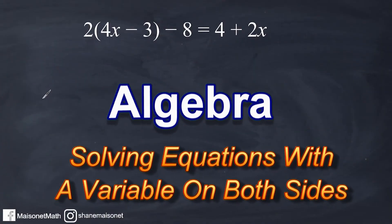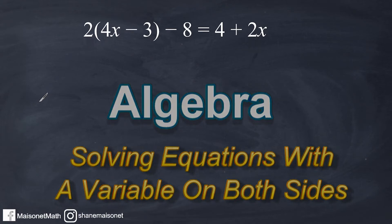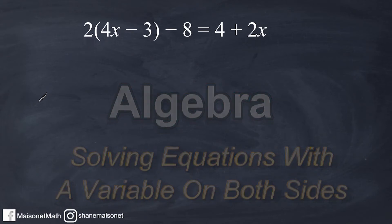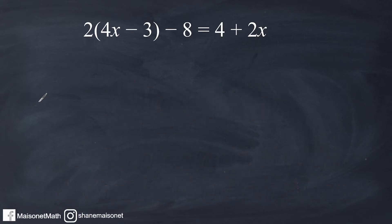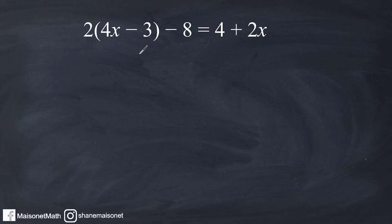Hey, this is Mr. Masonette, and what we're going to do in this tutorial is we are going to practice solving equations when we have a variable on the left side of the equation and on the right side. So let's get started. What we have here is 2 multiplied by the quantity 4x minus 3, minus 8, is equal to 4 plus 2x.